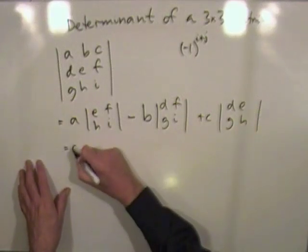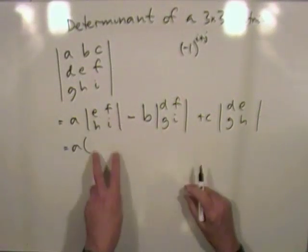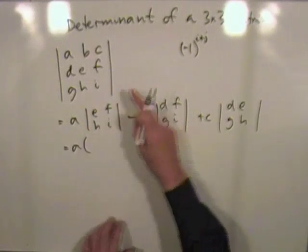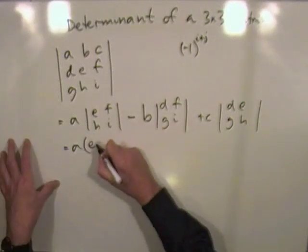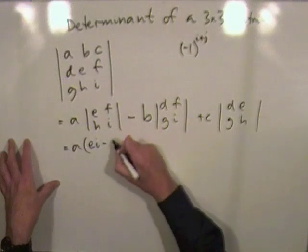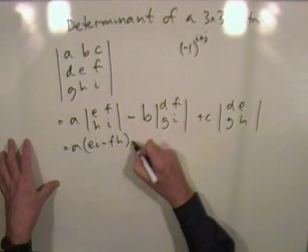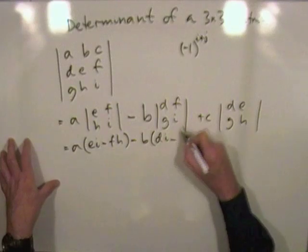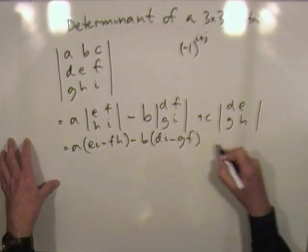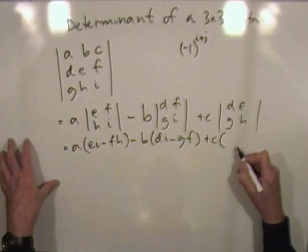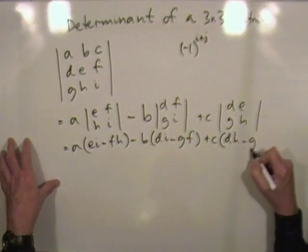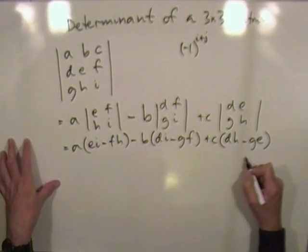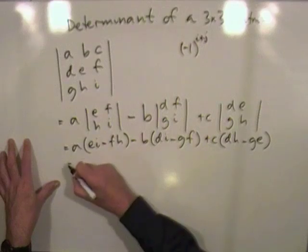Right, so multiplying that out, determinants of 2 by 2 matrices are easy, main diagonal minus the opposite diagonal. E, I minus F, H, B times D, I minus G, F, plus C times D, H minus G, E.